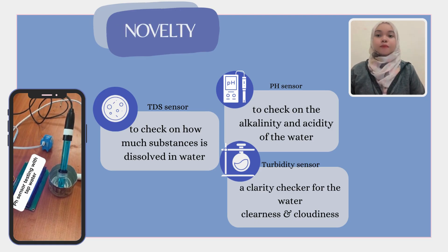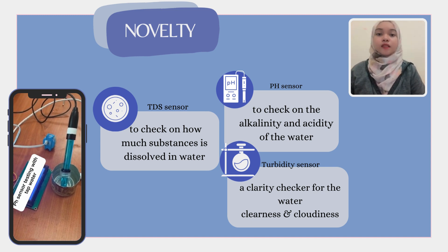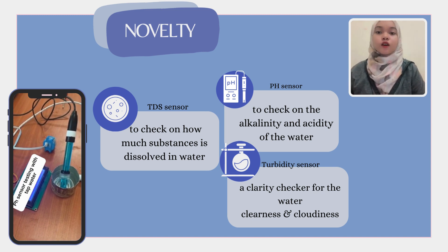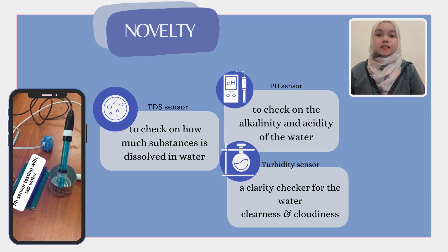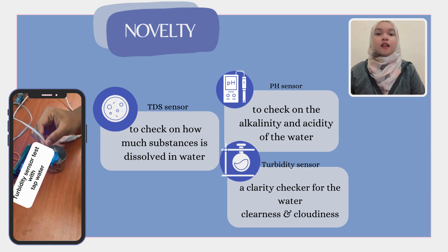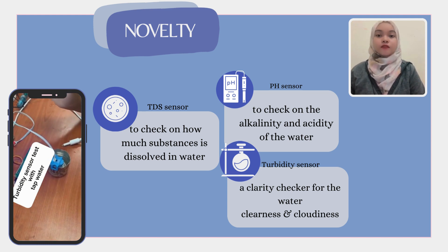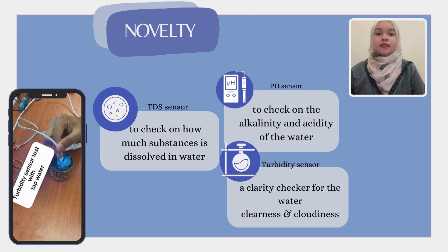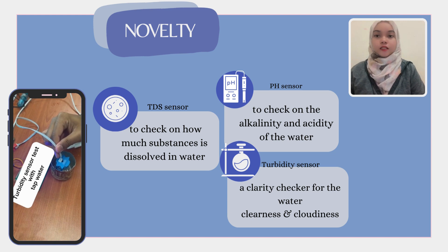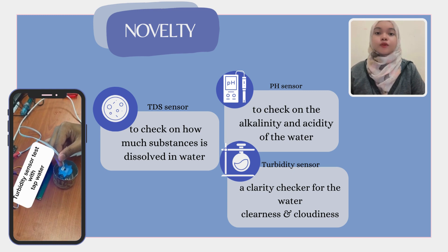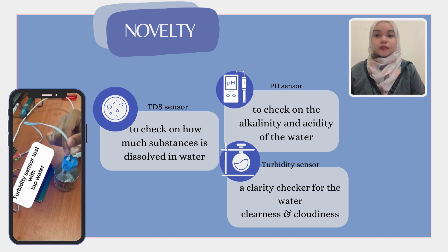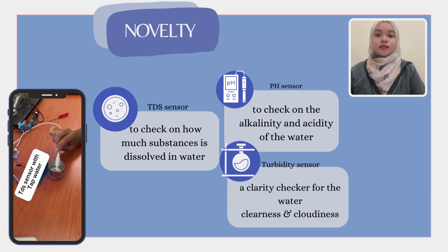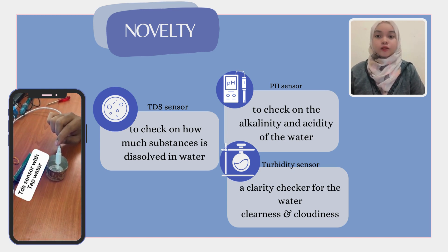For the novelty part, we embrace the latest in water quality testing with the integration of the Total Dissolved Solids TDS sensor. This cutting-edge addition allows for a meticulous examination of dissolved substances in water, providing invaluable insight into its alkalinity and acidity levels. Moreover, the sensor functions as a clarity checker, distinguishing between clearness and cloudiness in water. This innovative approach redefines water quality assessment, offering a comprehensive and nuanced understanding that extends beyond traditional parameters.